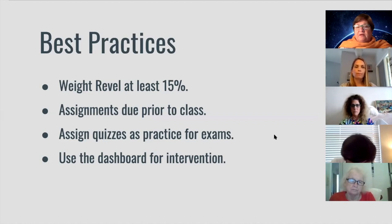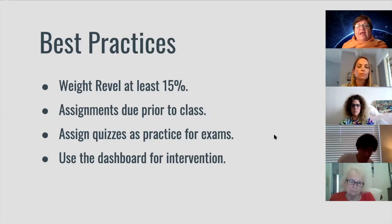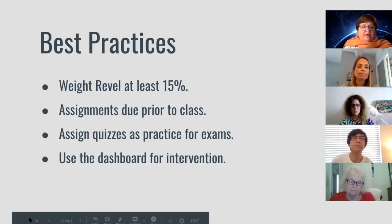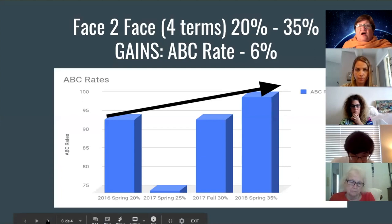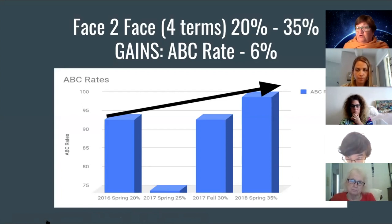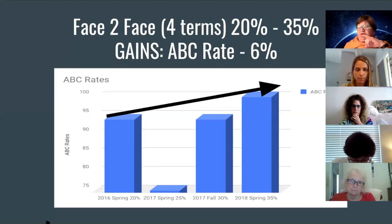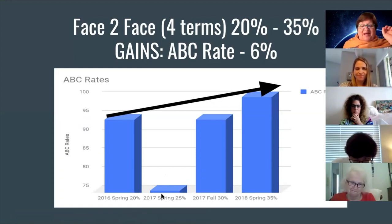I wanted to compare my online classes to my face-to-face classes for my provost. I was applying four best practices over a three-year period across all modalities. The results: I made Revel worth at least 15% of their grades — sometimes more depending on the modality; for online classes it was higher. I made all assignments due prior to class, not at the end of the term. I assigned quizzes as practice for my heavy-hitting exams, and I used the dashboard for intervention.